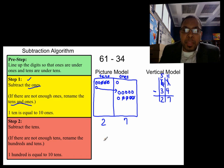A completed number sentence will show that 61 minus 34 equals 27. That is the completed number sentence.